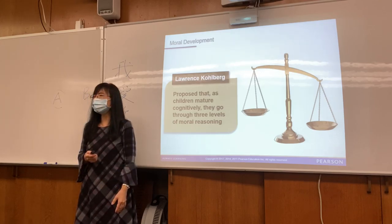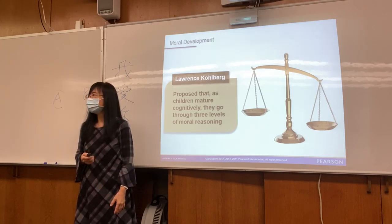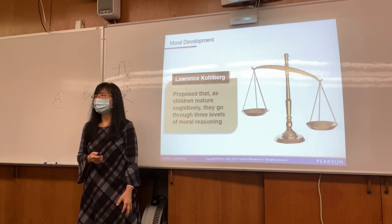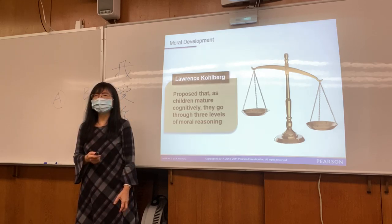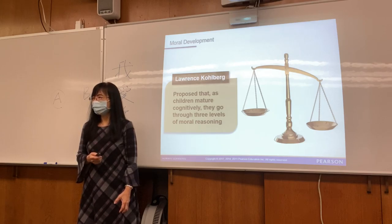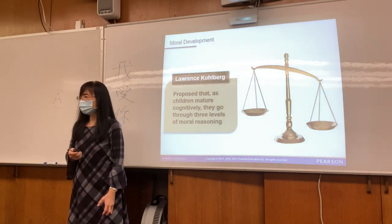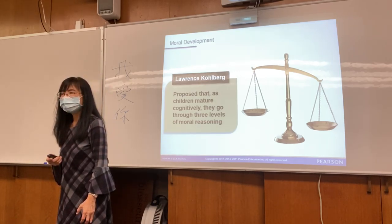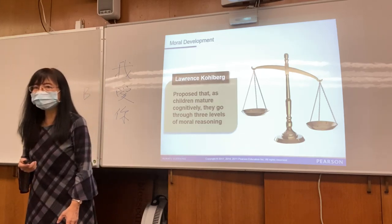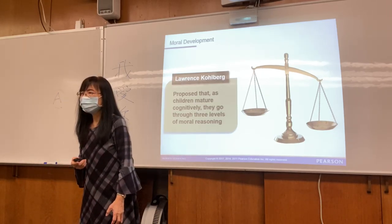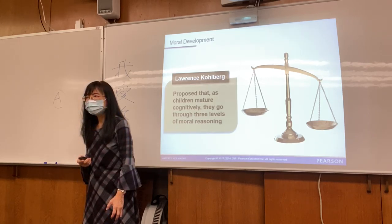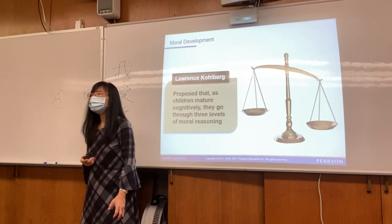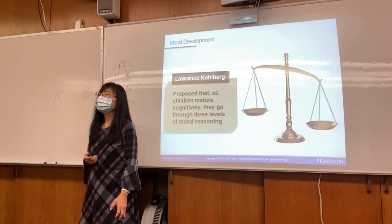Now let's talk about moral development. Kohlberg — who did the homework on Kohlberg? He essentially created a theory of moral development, building on Piaget's cognitive stages. He asked: Piaget talks about cognitive development — what about moral development? His research method was simple: he told a story about a poor couple. The wife is very sick and the only medicine that can cure her is in the doctor's house. Would you steal the medicine to save your wife, or keep your morals and let her die?